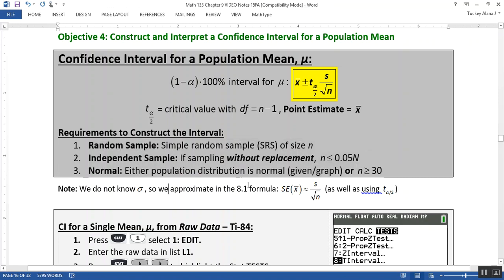So that either is given to us in a normal probability plot, or it's written in the instructions somewhere, or we need the sample size to be greater than 30. Now, these things should all be looking extremely familiar, because they're based off the central limit theorem from section 8.1. Also, in section 8.1, we learned that s over the square root of n is called the standard error of x-bar. Well, it's an approximation of it, which is fine. And we also learned about using t alpha over 2 earlier on in this section.